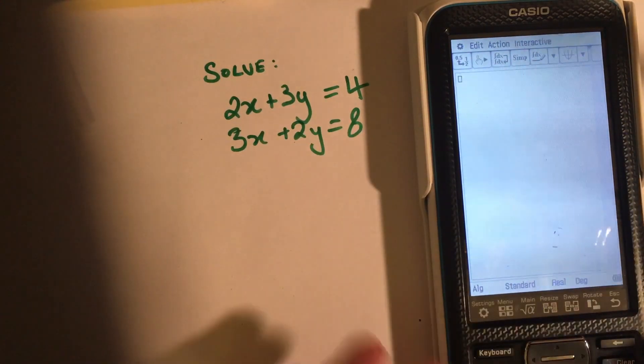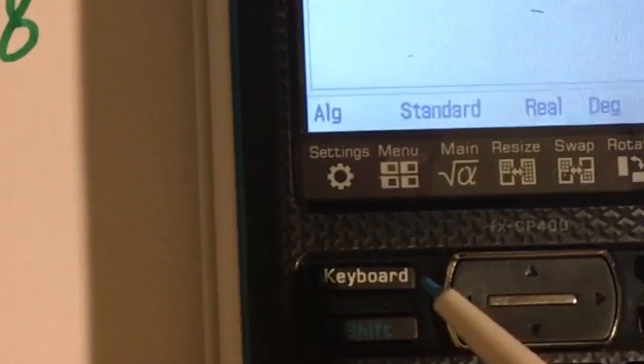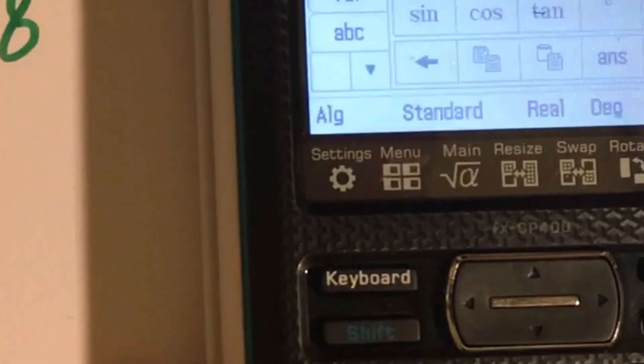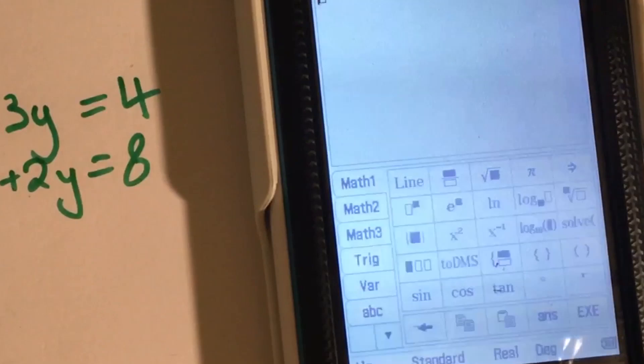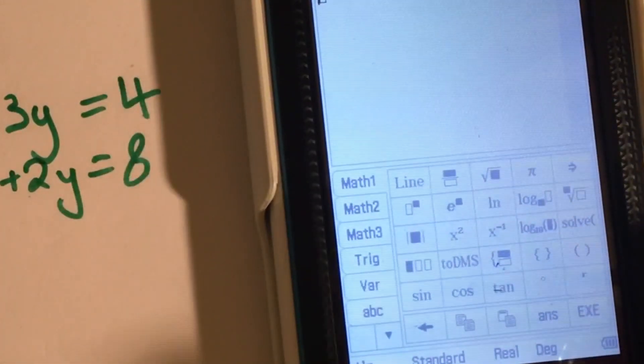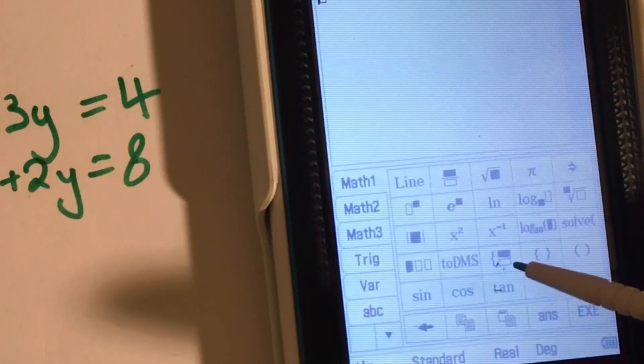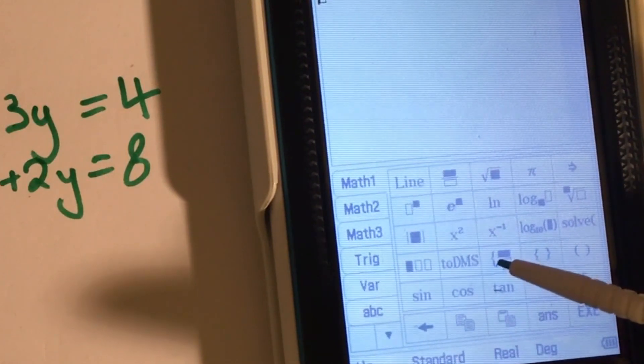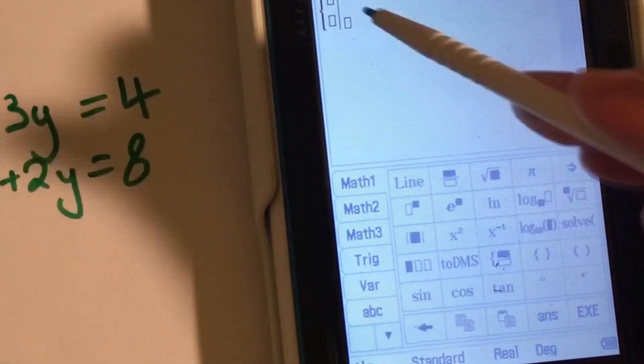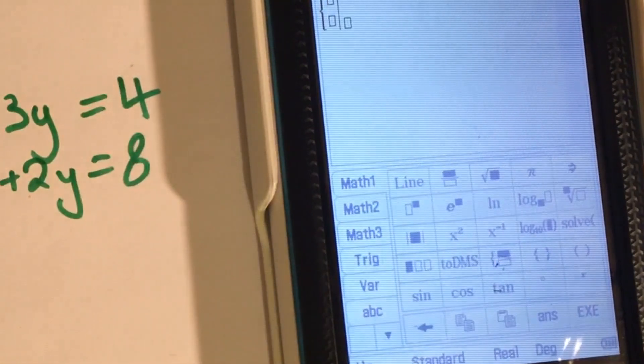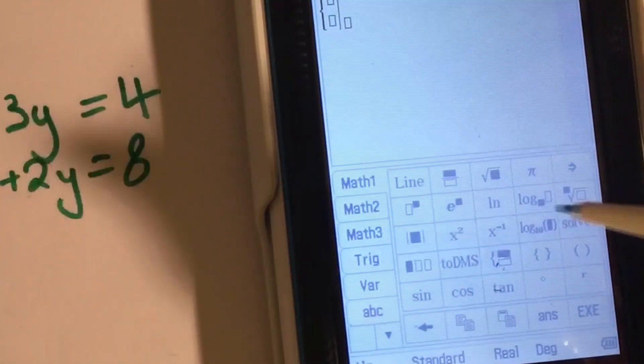What you'll need to do is press keyboard, and then press the simultaneous equation button, which is right here. You'll see that we've got three boxes turn up.